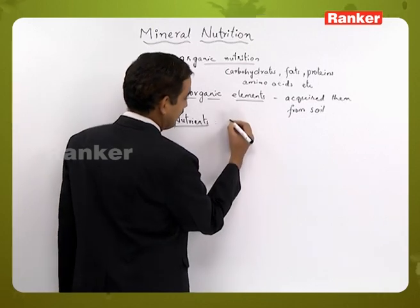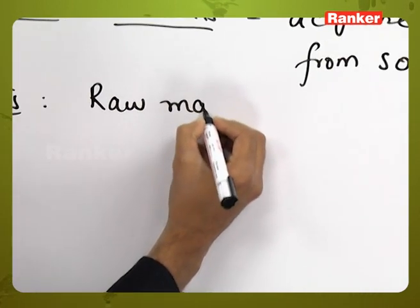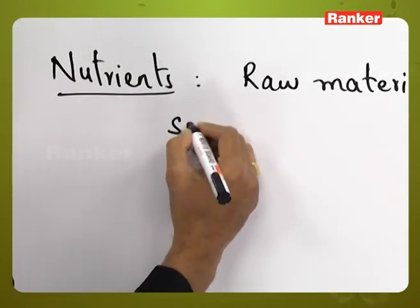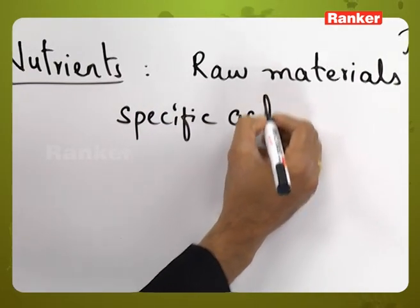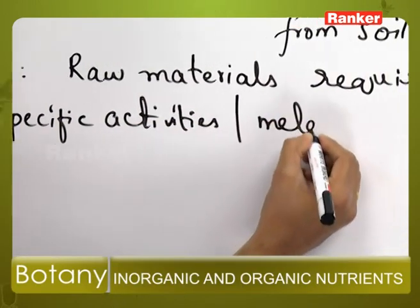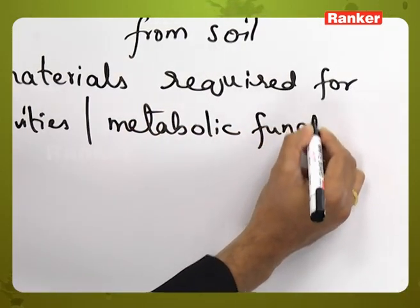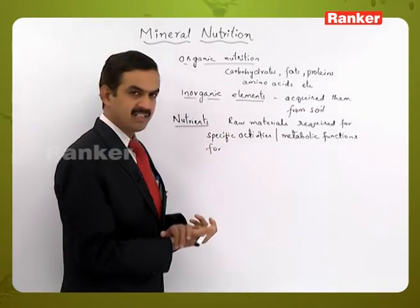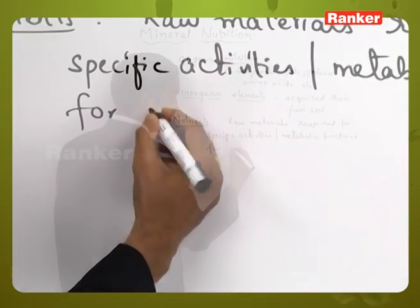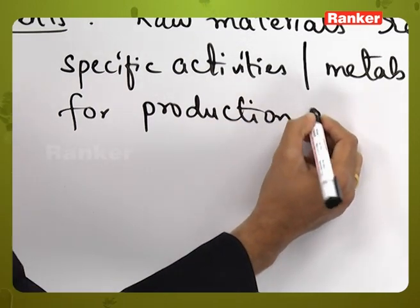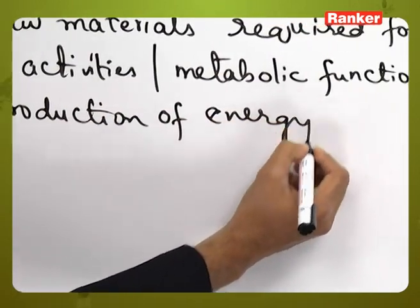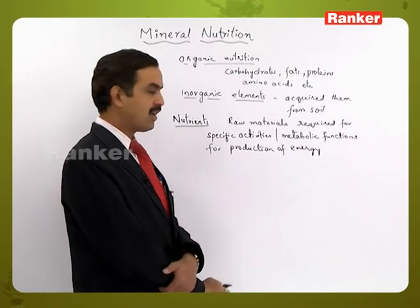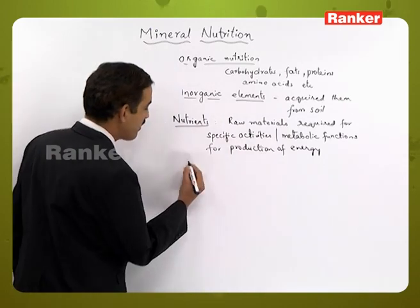Nutrients are the raw materials required for specific activities or metabolic functions. The mineral nutrients are required for producing energy. These raw materials, which are needed for metabolic functions and which generate energy in the process, are called nutrients.